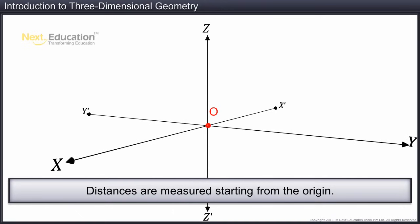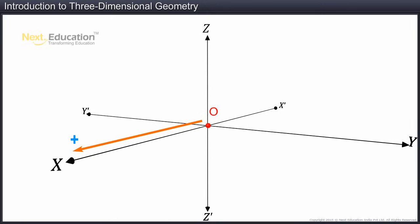Distances are measured starting from the origin. Distances measured in one direction are taken as positive and in the opposite side as negative. For example, the distance measured from the origin along the x-axis in the direction shown is taken as positive. The distance measured from the origin in the opposite side is considered negative. To indicate this, we assign the symbol x-dash. A similar convention is followed for calculating the distances along the y and z-axis.